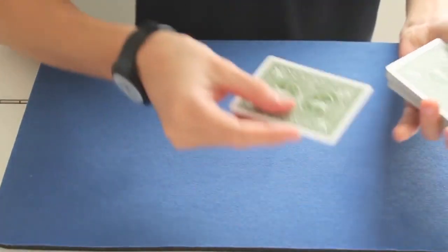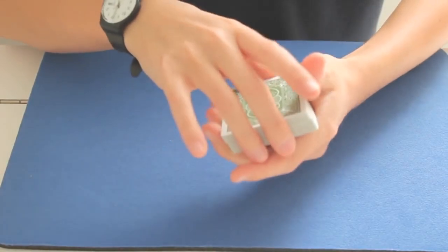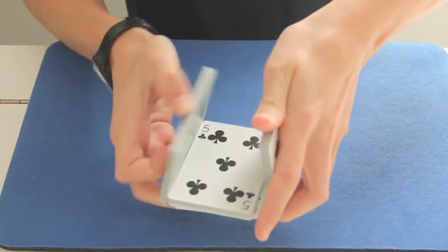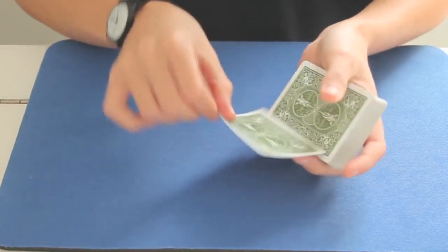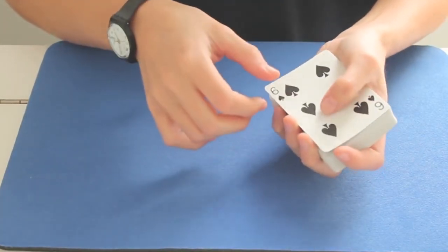And then I will simply lose it in the deck, like this. And now I'm going to take the top card, which is the six of spades.